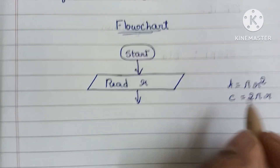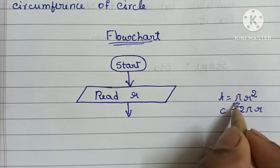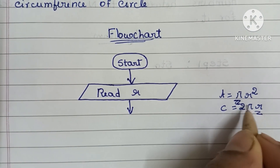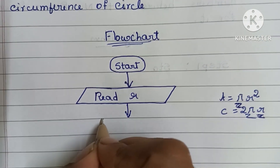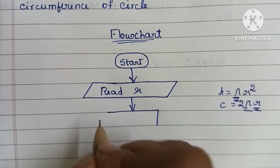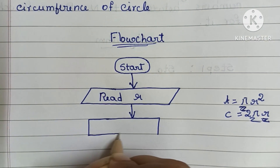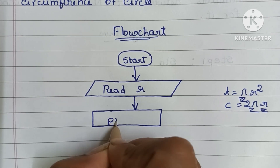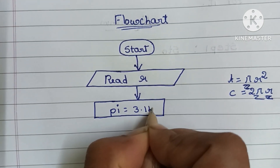Next, we have to declare the variable pi. The pi value declaration is done within a rectangular shape. So here we draw a rectangle and within that declare pi = 3.14.